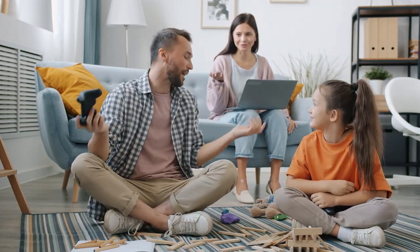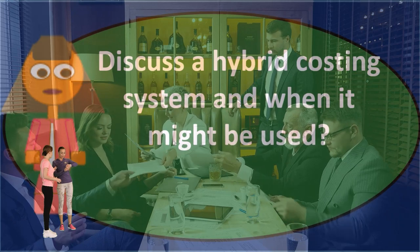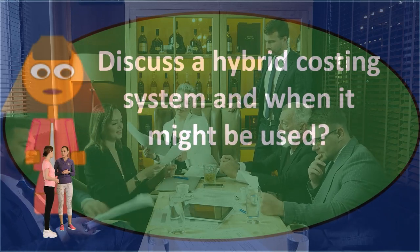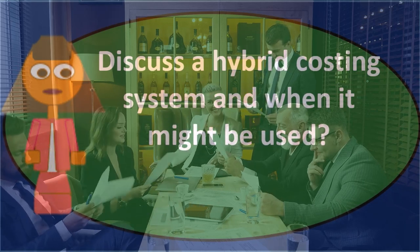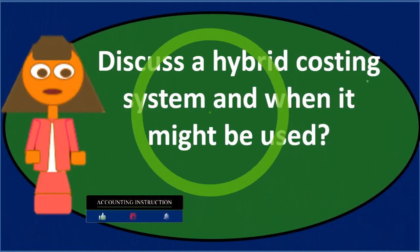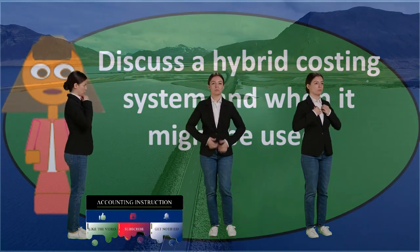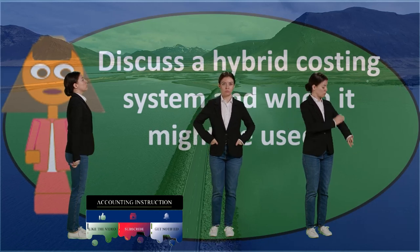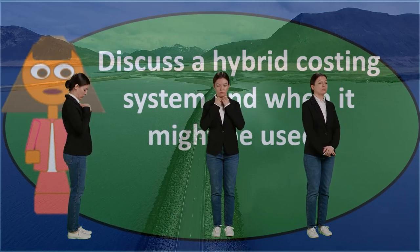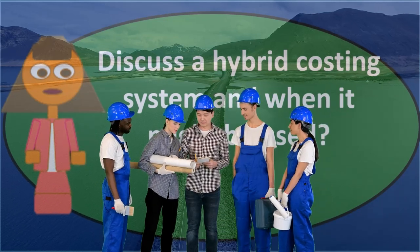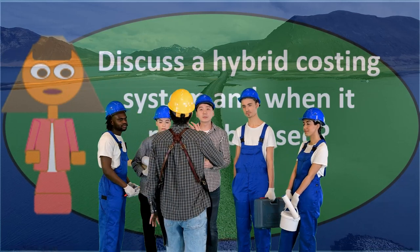In that case we'd have a process cost system to make all the pieces that are all going to be the same, and then a job cost system set up when someone makes an order so we can customize that order to a particular job. You can see that scenario in a lot of different areas. For instance, if we're making custom surfboards and we produce the foam ourselves, the production of the foam material would be the same — process costing — and then we would customize the shape, which would be job costing.